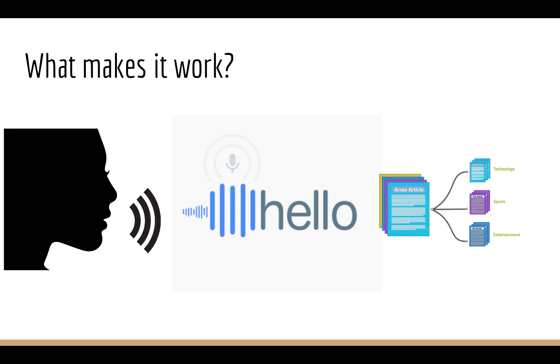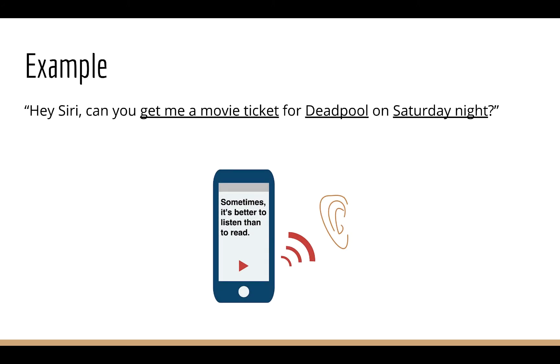What happens after we turn what you say into text? Well, then we need to figure out what you mean. You can think of this as a text classification problem. We take in some text and we try to predict what you're trying to say. For example, you might say, Hey Siri, can you get me a movie ticket for Deadpool on Saturday night? And from this, the system has to figure out a few things.